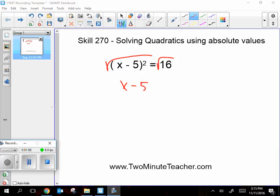When you take the square root of both sides, it's the absolute value of x minus 5 is equal to 4. And then I split it into two things.